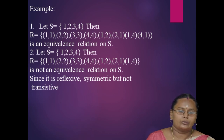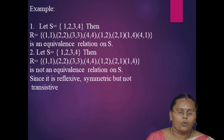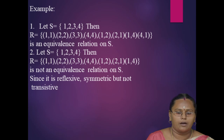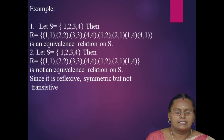Here, (1,1), (2,2), (3,3), (4,4) are in R, satisfying reflexivity. Also, (1,1) and (1,2) implies (1,2) is also in R, satisfying transitivity. Similarly, other relations are also true. Therefore, R is an equivalence relation.